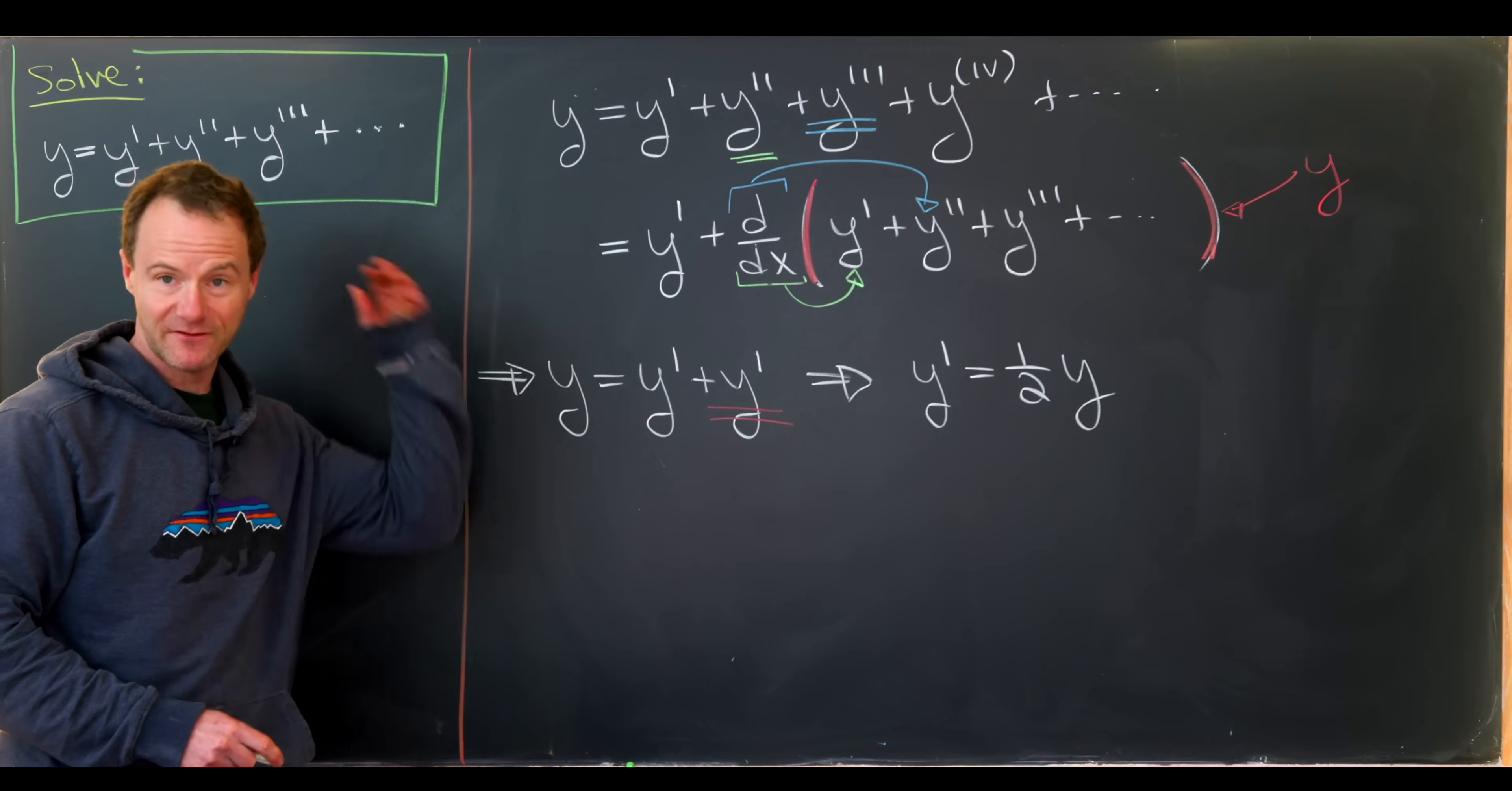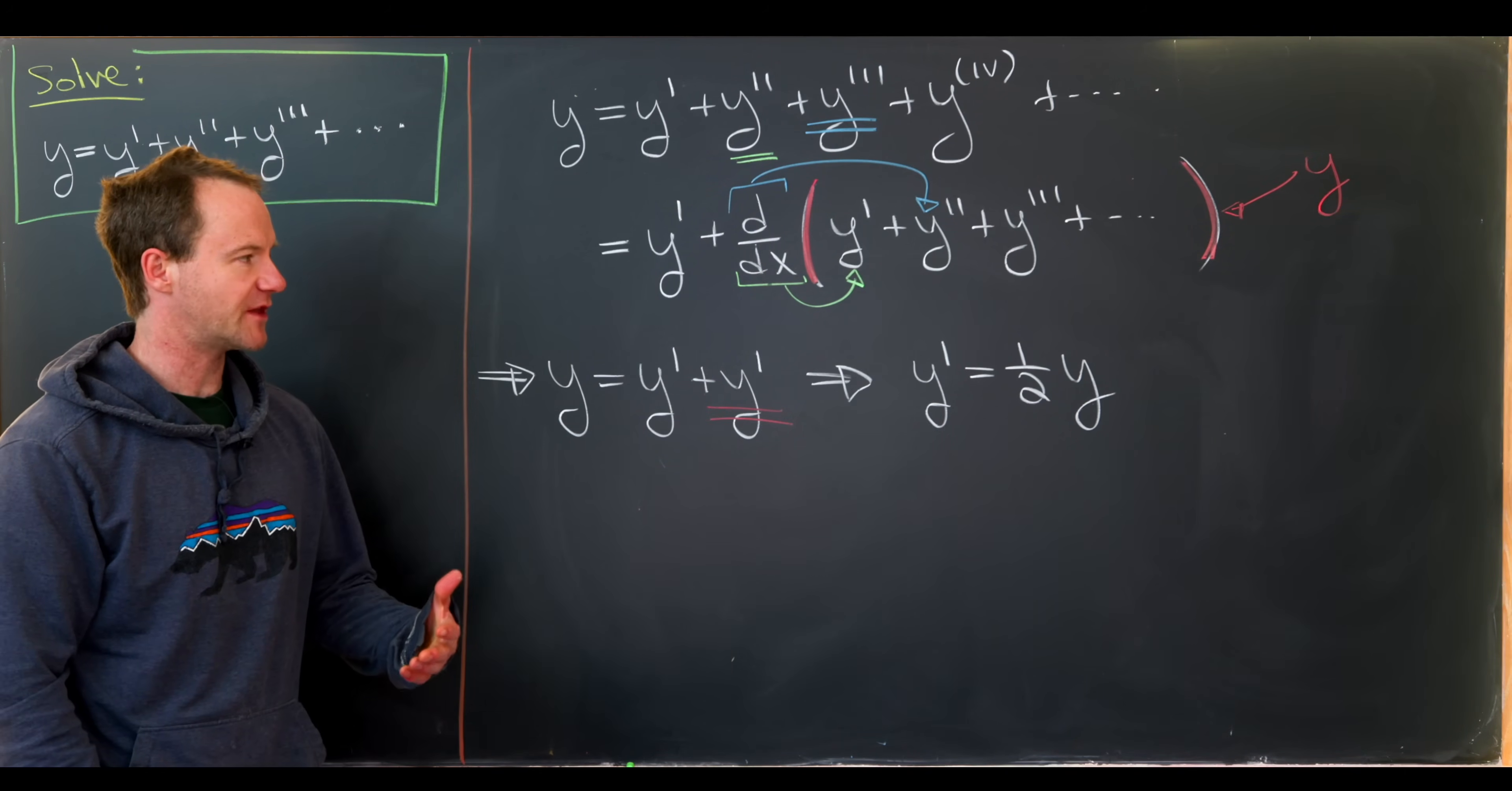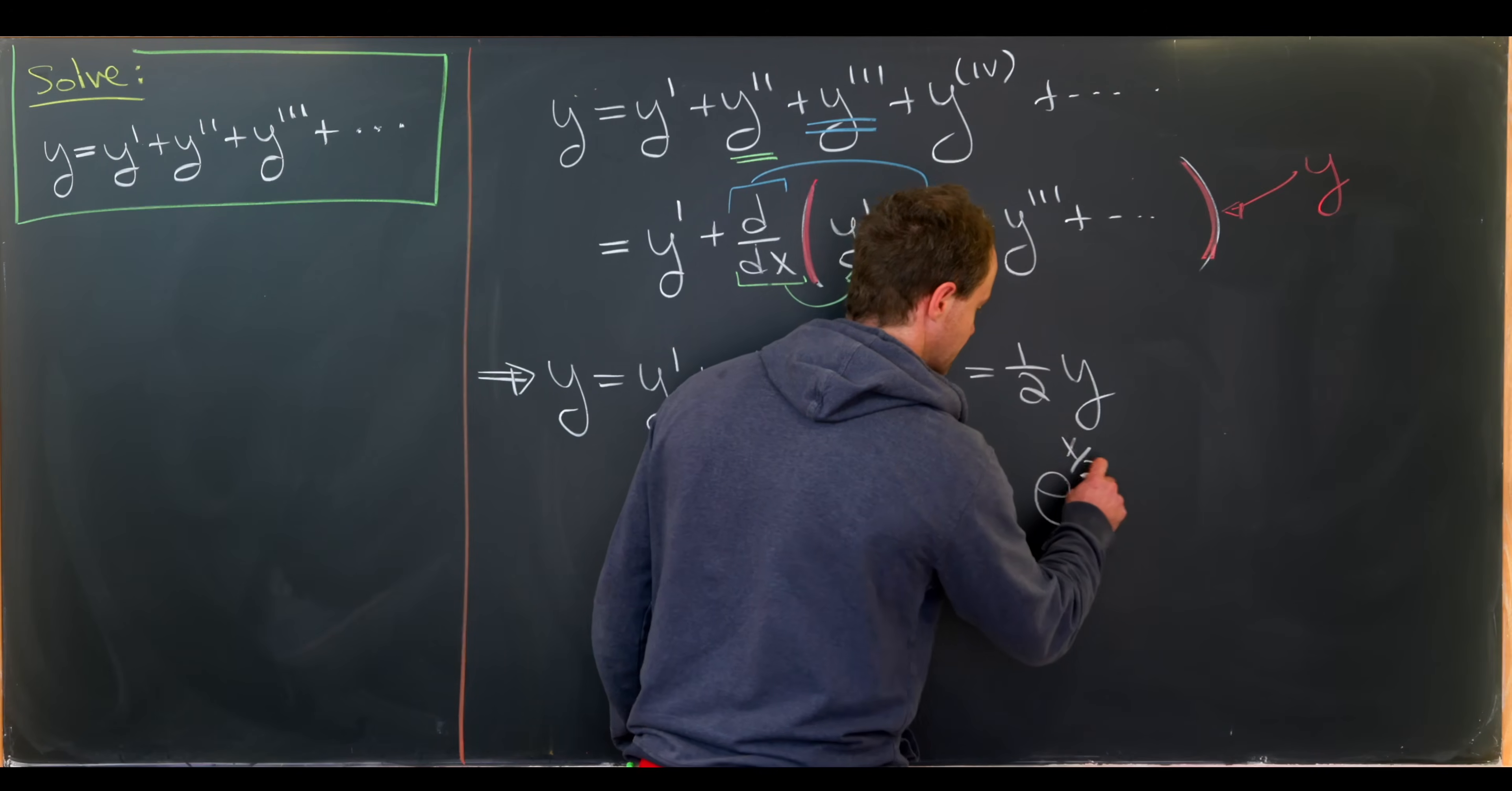Maybe my favorite way to solve this is just to look through all of the functions that you know and think of one that when you take its derivative you end up with half times the function you started with. And you'll immediately realize that the solution to this will be an exponential and we'll get y equals e to the x over 2.